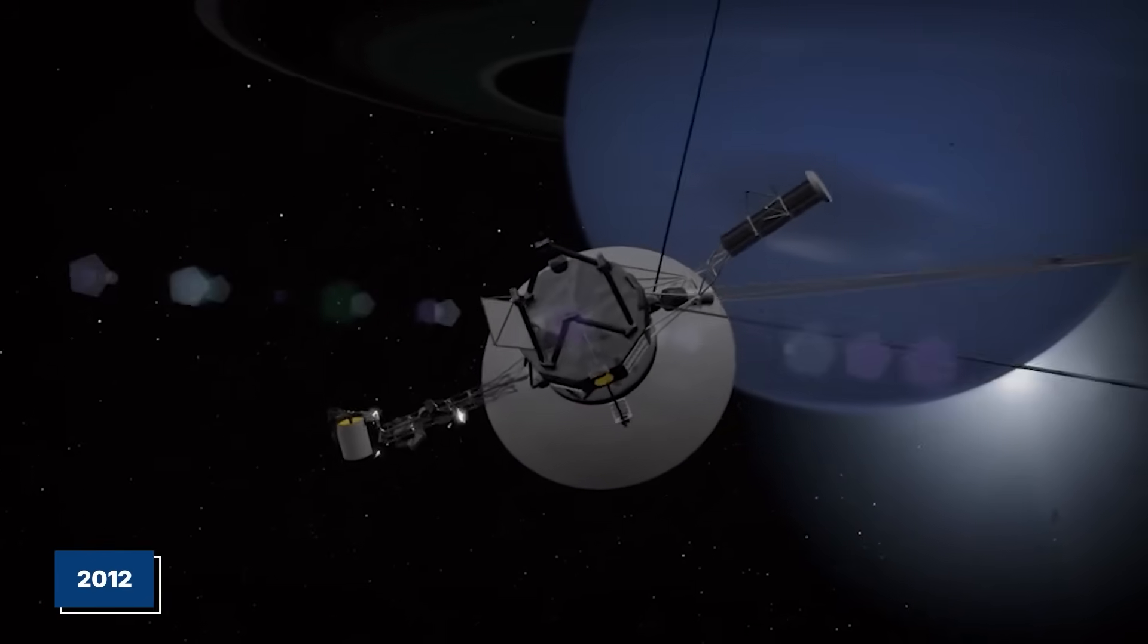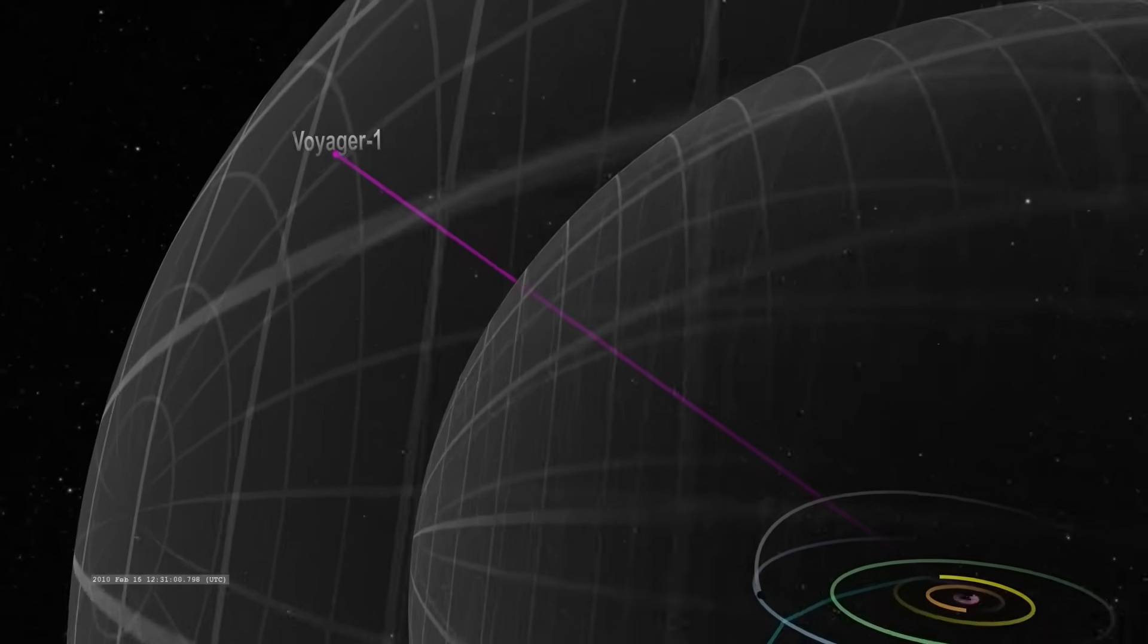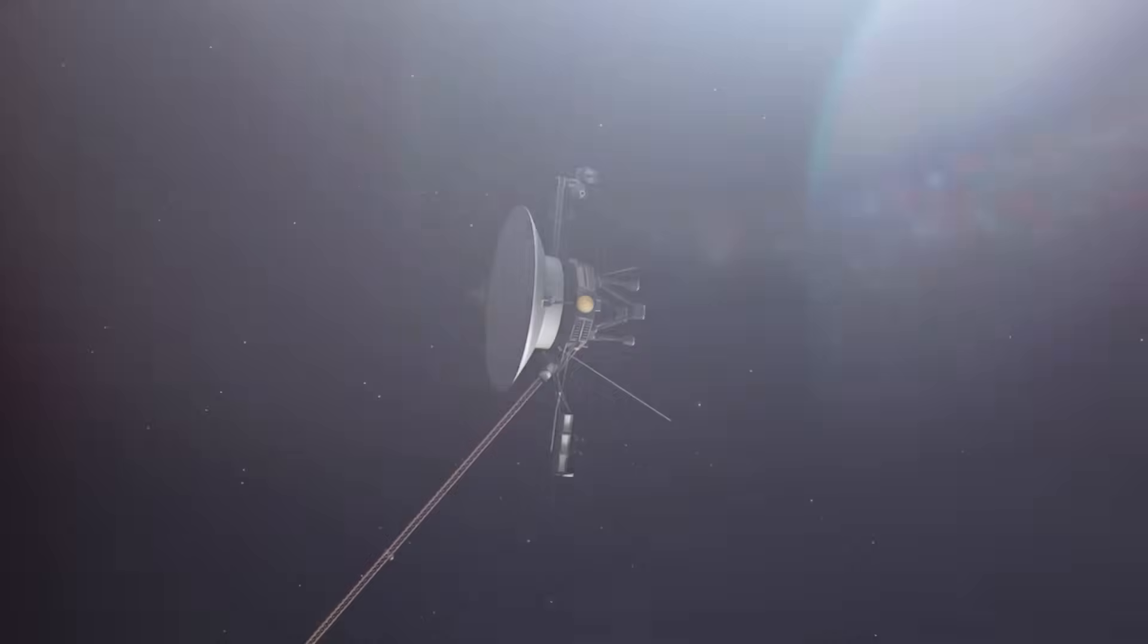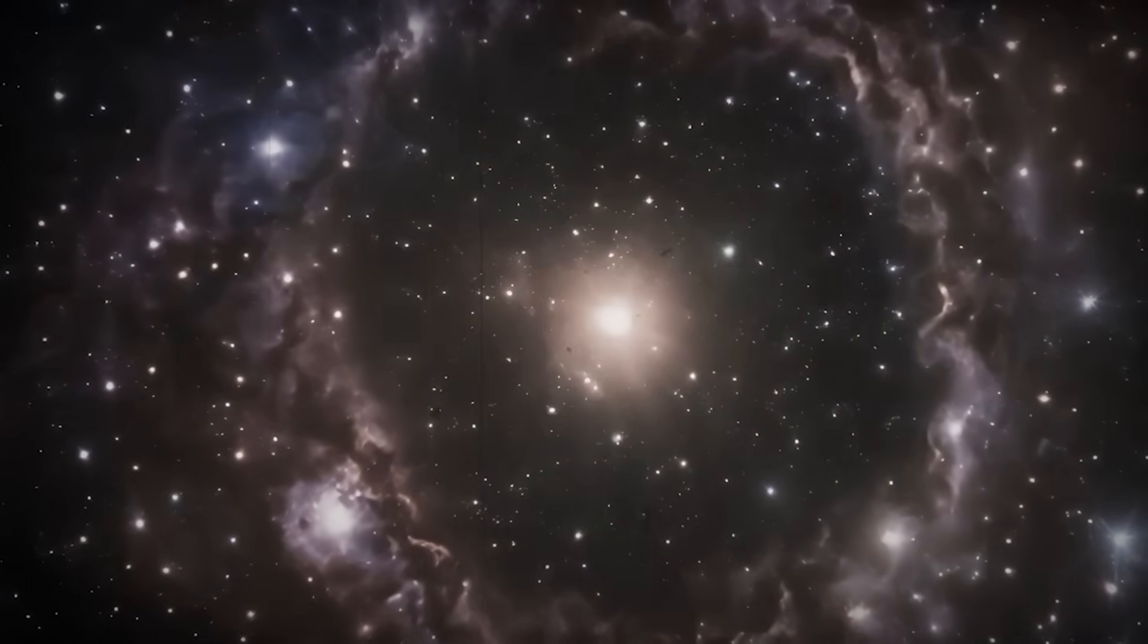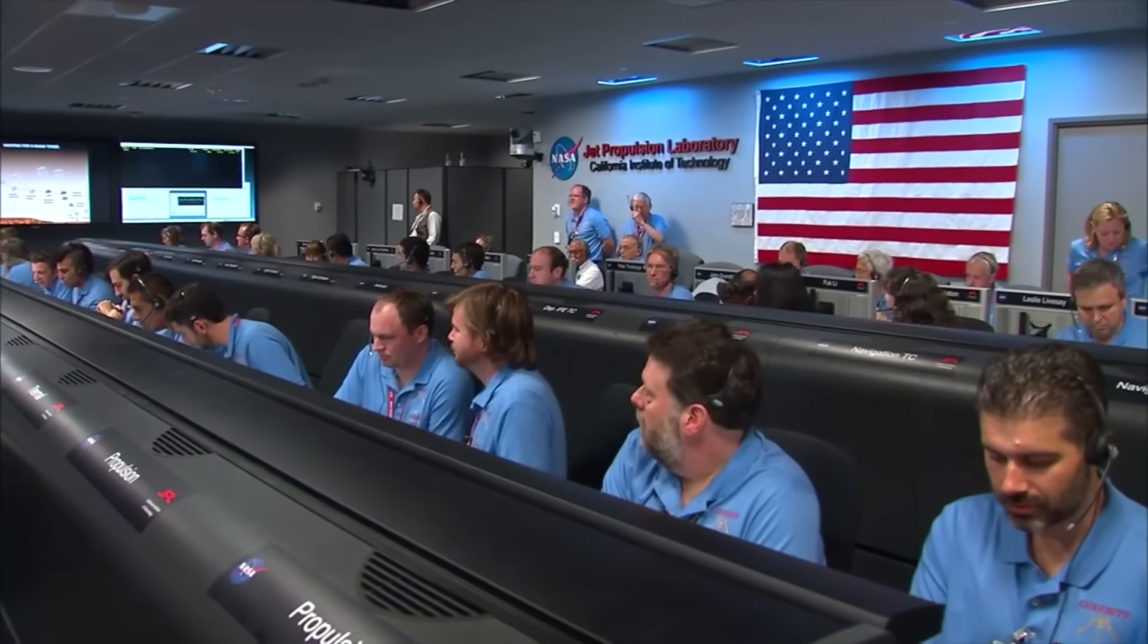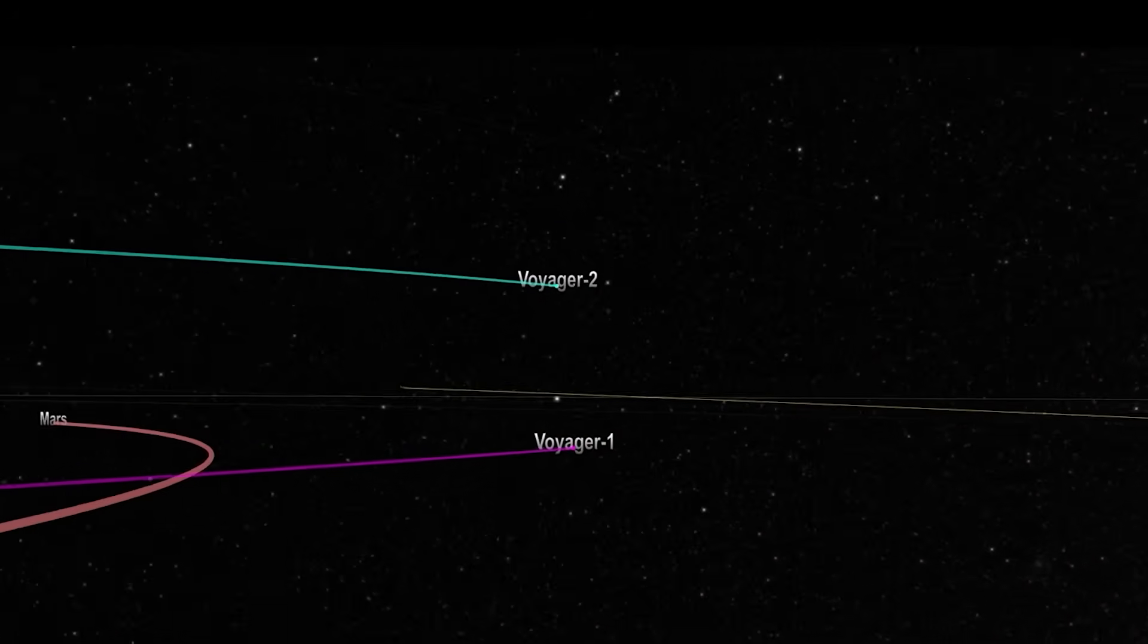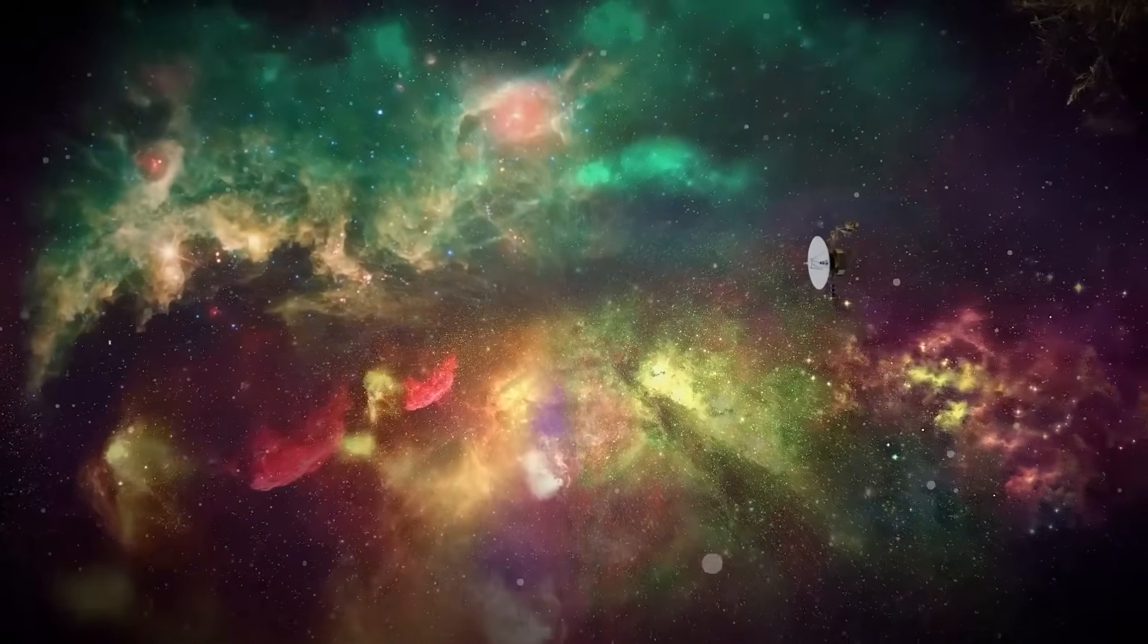In 2012, it reached a boundary scientists had dreamed about for decades: the heliopause, where the solar wind dies and interstellar space begins. But what the probe found there was not what anyone expected. The models predicted that the magnetic fields would shift orientation as Voyager crossed into the galaxy beyond. Instead, the magnetic alignment barely changed. Plasma density rose sharply, but the direction of the field remained the same. It was as if the probe hadn't left the solar system at all, but entered a distorted reflection of it.